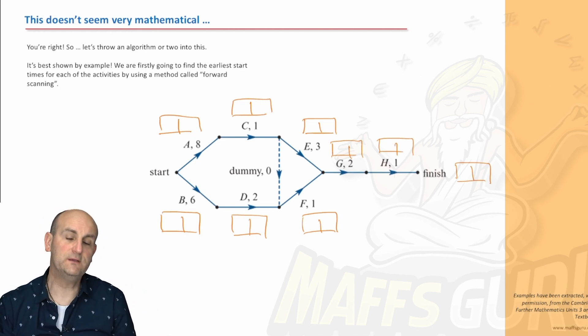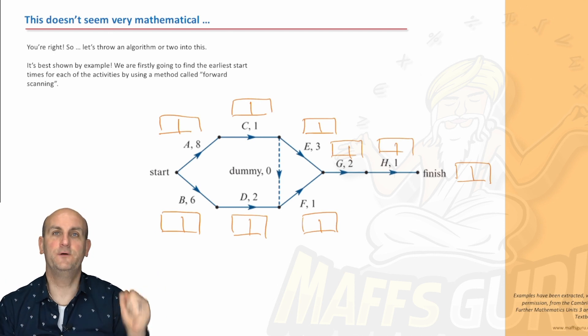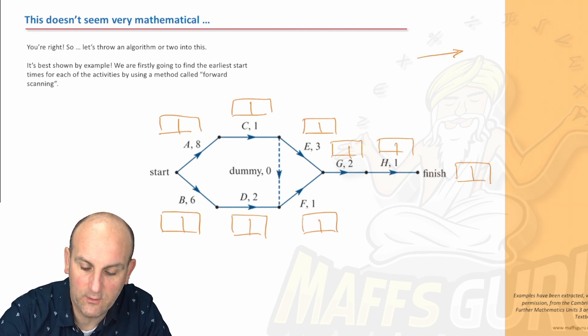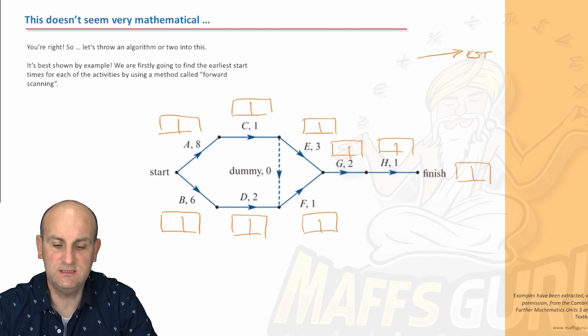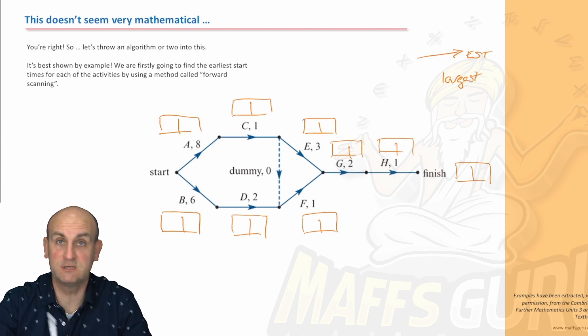First things first, we scan through the diagram from left to right. And that's going to find the earliest start times of each of my projects. So when we scan that way, we are looking for the earliest start times. And in that situation, we choose the largest of any possible choices.